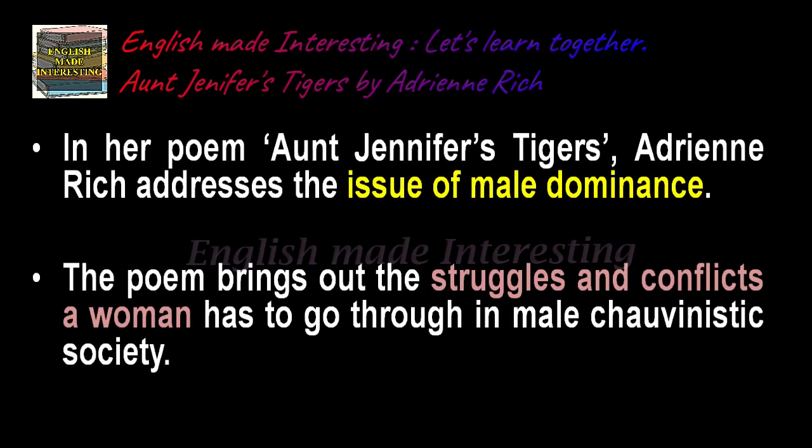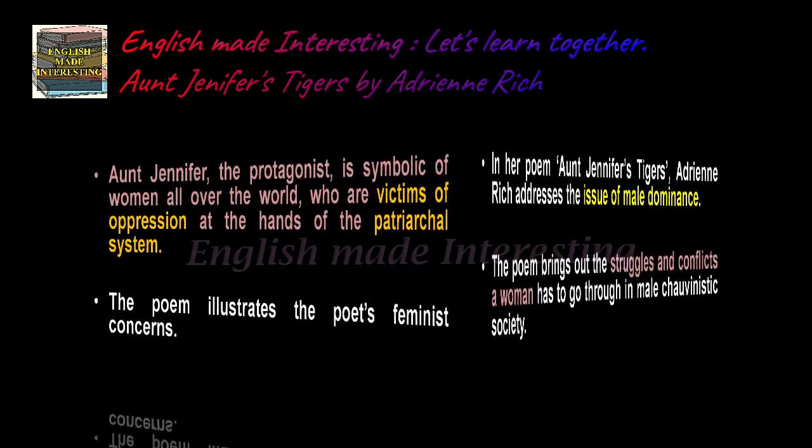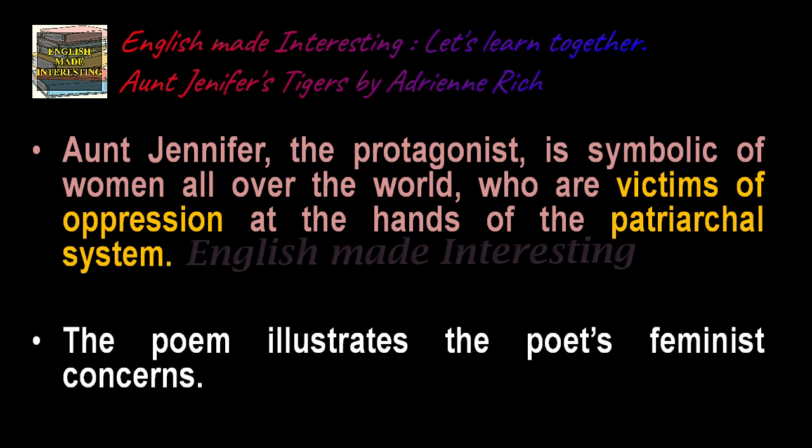Now about the poem. In her poem Aunt Jennifer's Tigers, Adrienne Rich addresses the issue of male dominance. The poem brings out the struggles and conflicts a woman has to go through in a male chauvinistic society. Aunt Jennifer, the protagonist, is symbolic of women all over the world who are victims of oppression at the hands of the patriarchal system. The poem illustrates the poet's feminist concerns.